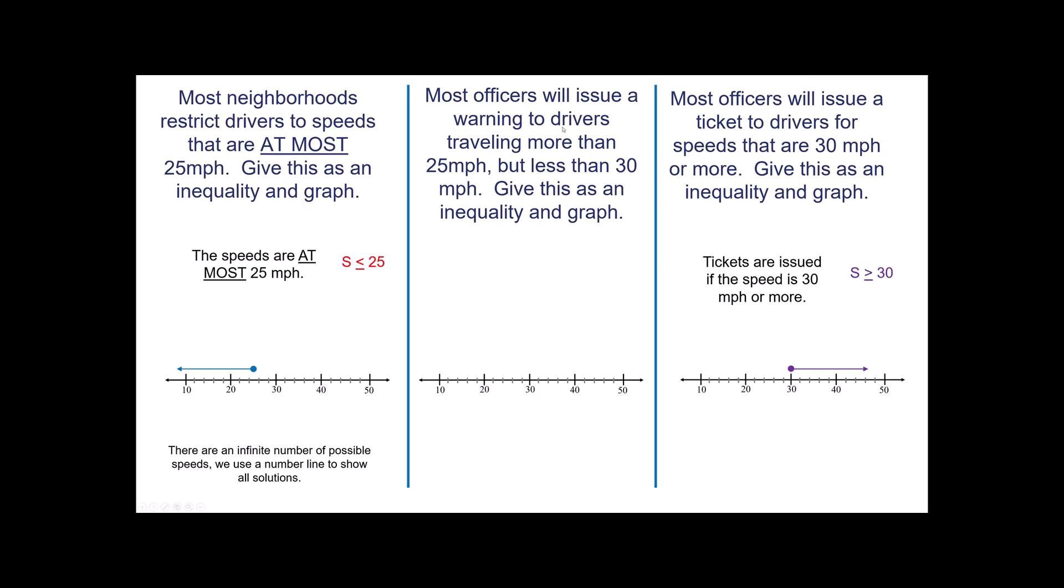Lastly, most officers will issue a warning to drivers traveling more than 25 but less than 30. Give this as an inequality and a graph. I'd suggest pausing your video to try this one. The speed is more than 25 but less than 35 miles per hour. What's that going to look like? 25 is less than the speed in this category, which is less than 30. If you are exactly 25, the speed limit says you're okay. If you're exactly 30, the problem says you are going to get a ticket. But this area in between not including 25 and 30, well, that's right here. And I put open circles to ensure that we realize 25 and 30 are not included.